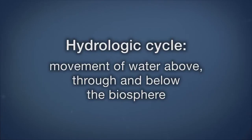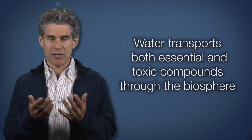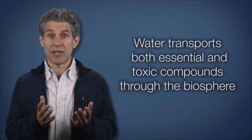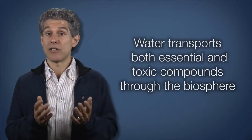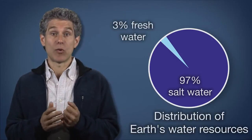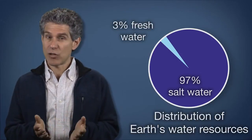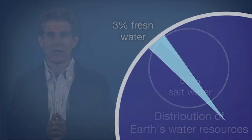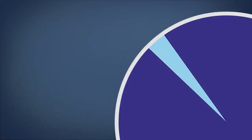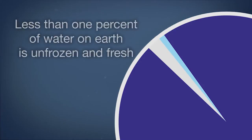Water is the primary agent for moving different compounds through the biosphere, both those that are essential to life and those that are toxic. On Earth, about 97% of our water is in the oceans, and less than 3% is freshwater. Of freshwater on Earth, slightly more than three-quarters is stored in ice or glaciers, so less than 1% of water on Earth is unfrozen freshwater potentially readily available for human use.